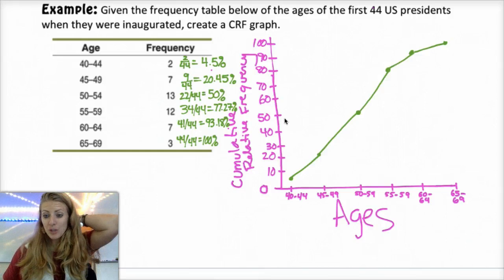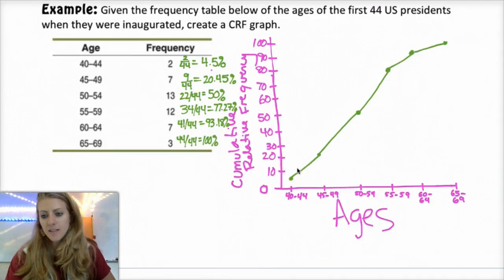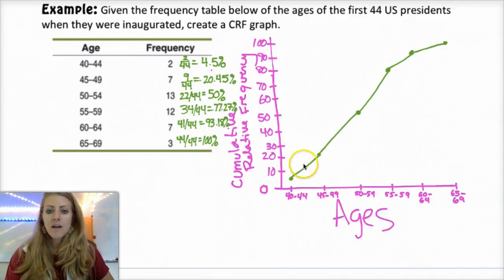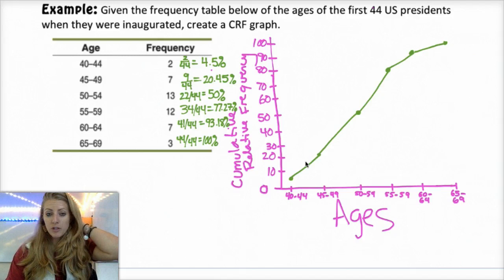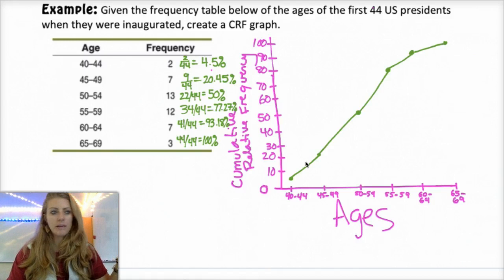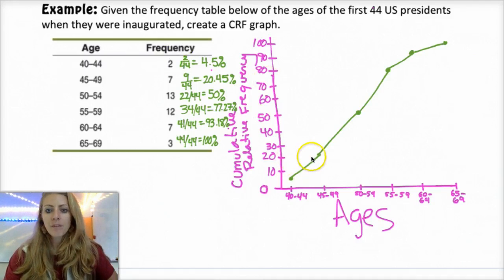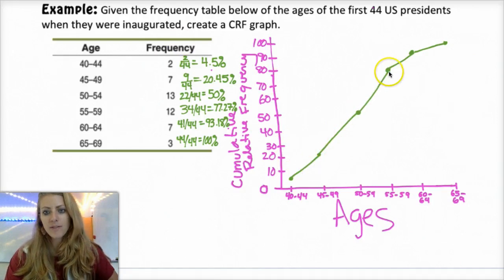You kind of have to think about whether or not the distribution is skewed based off of an Ogive graph. It's not terribly easy to tell. But with a stronger or a higher slope, a larger slope, you have a higher amount of data between the two points. And so basically, that would be where the chunk of your data is. So you see most of the data is between the 40s and 50s.